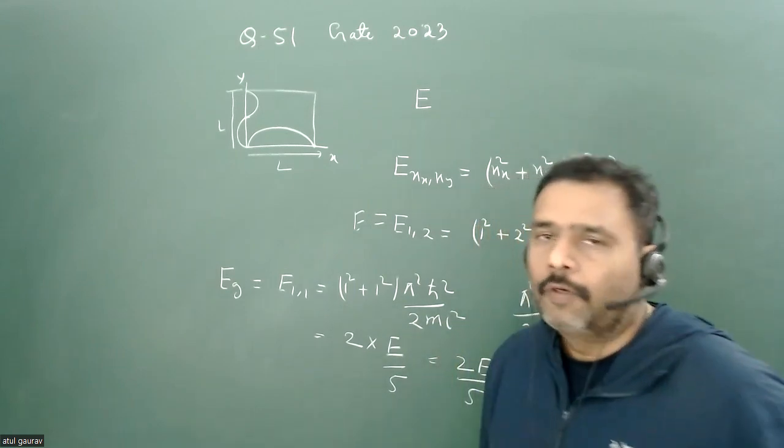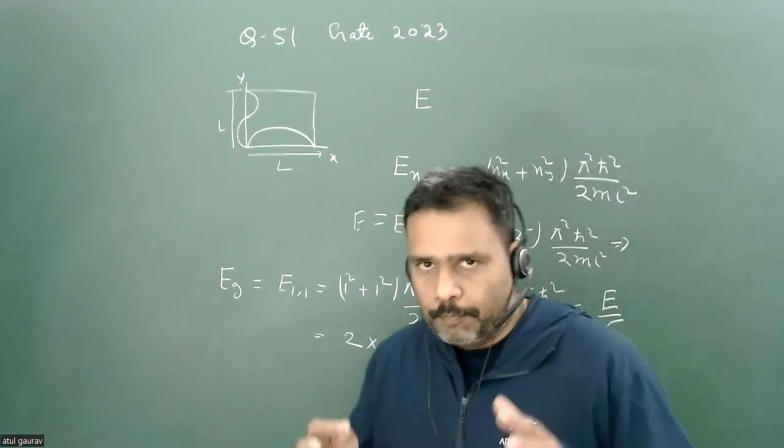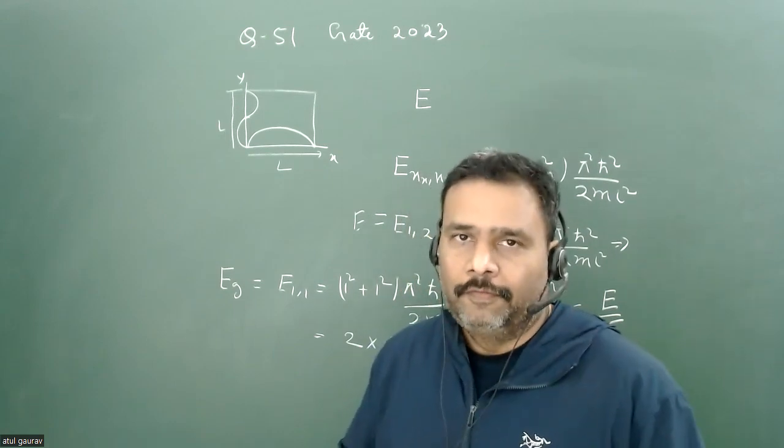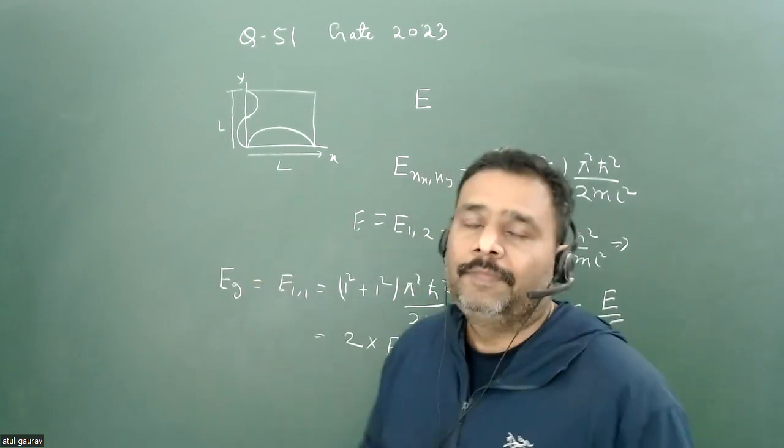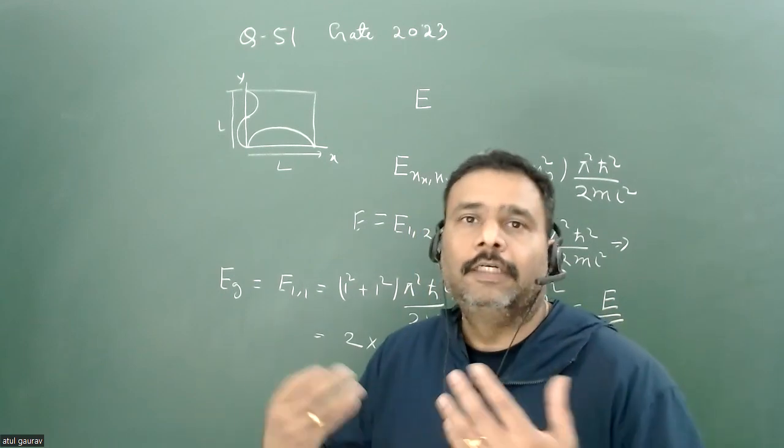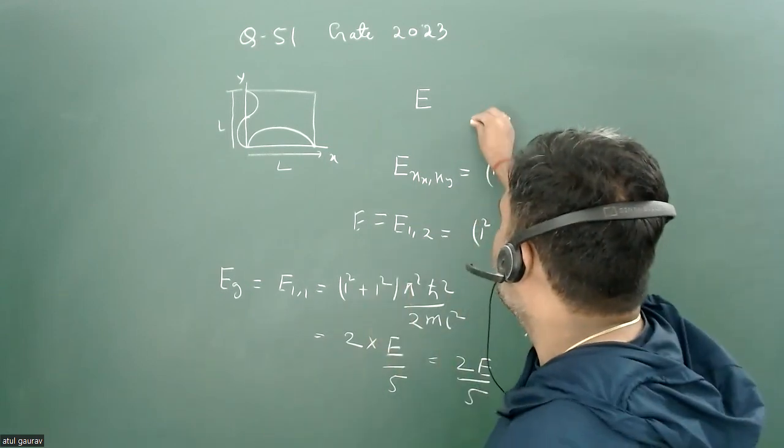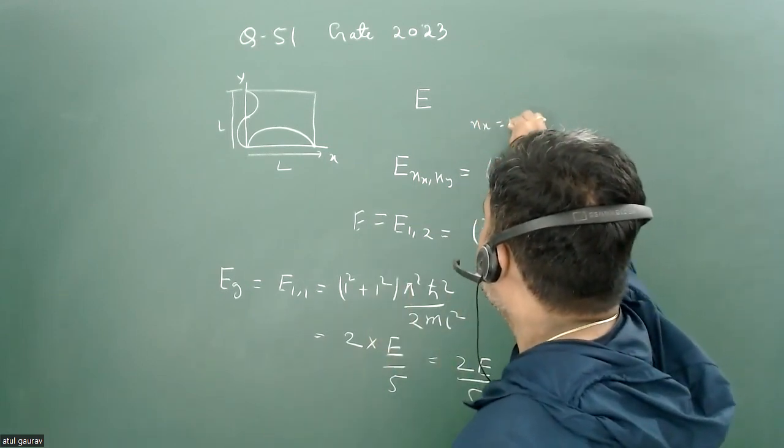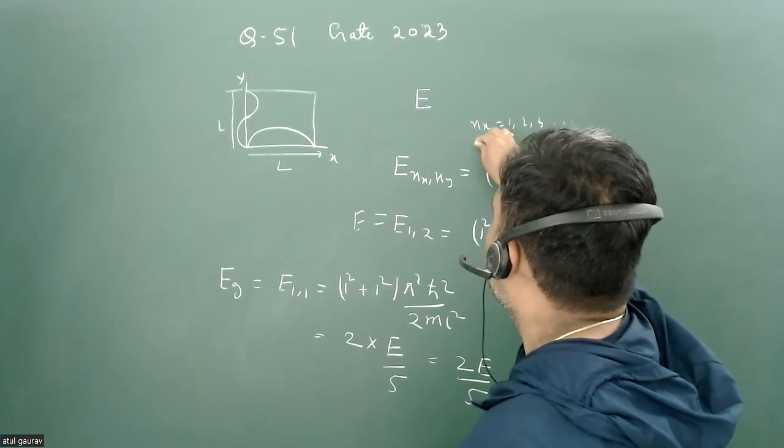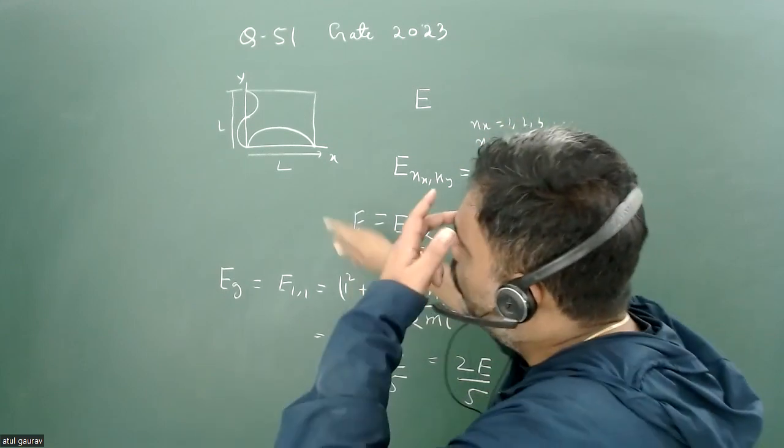But yes, you have to understand the basics of the system, that when you have which kind of mode associated with which kind of quantum number. And we know that here we have nx is equal to 1, 2, 3 independently, and ny is equal to 1, 2, 3 independently.